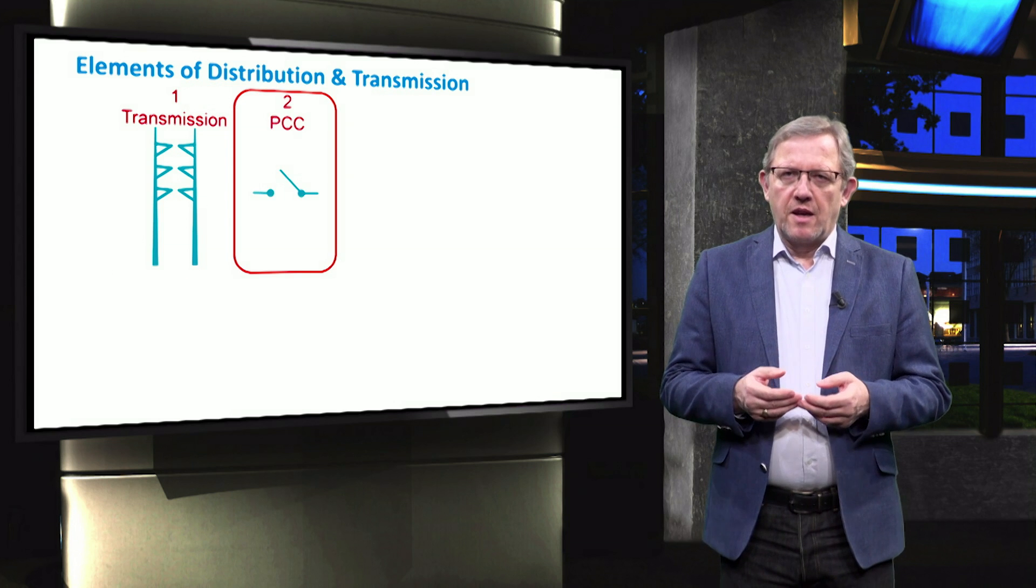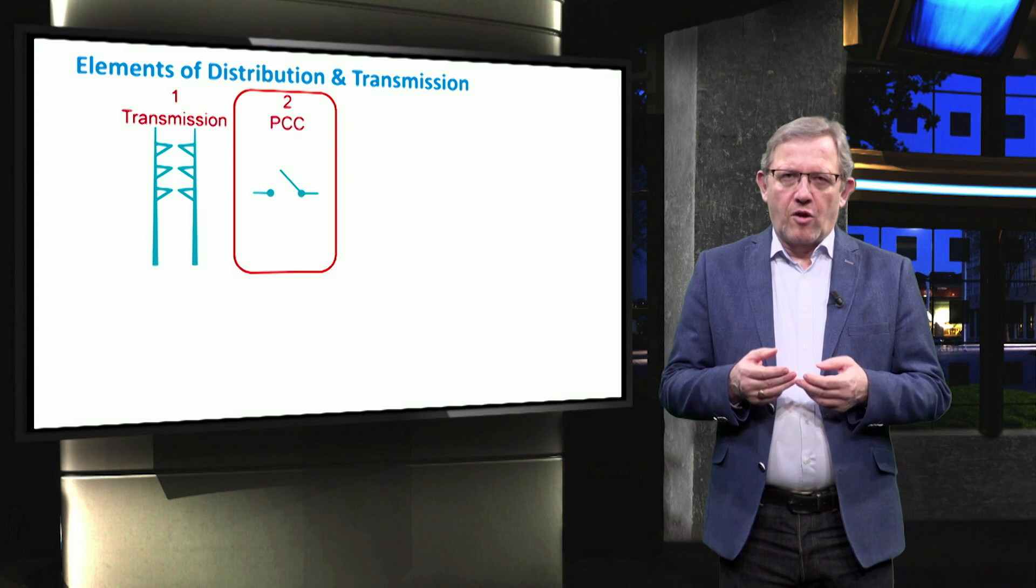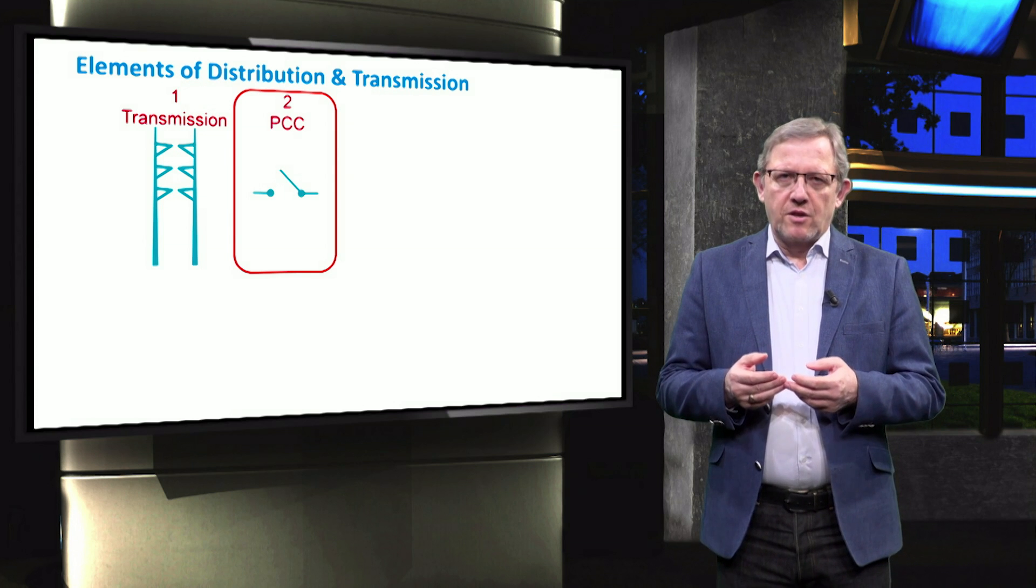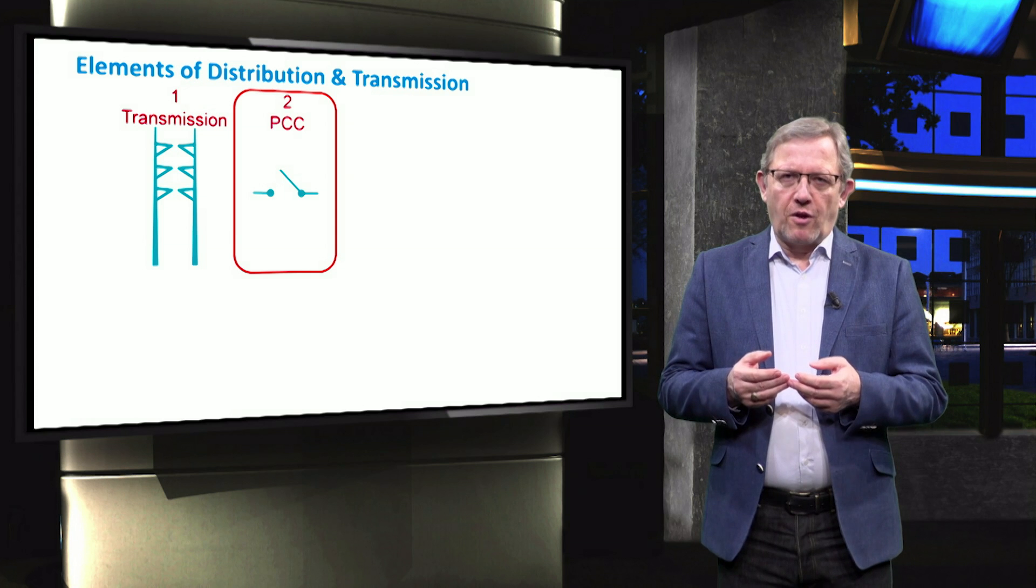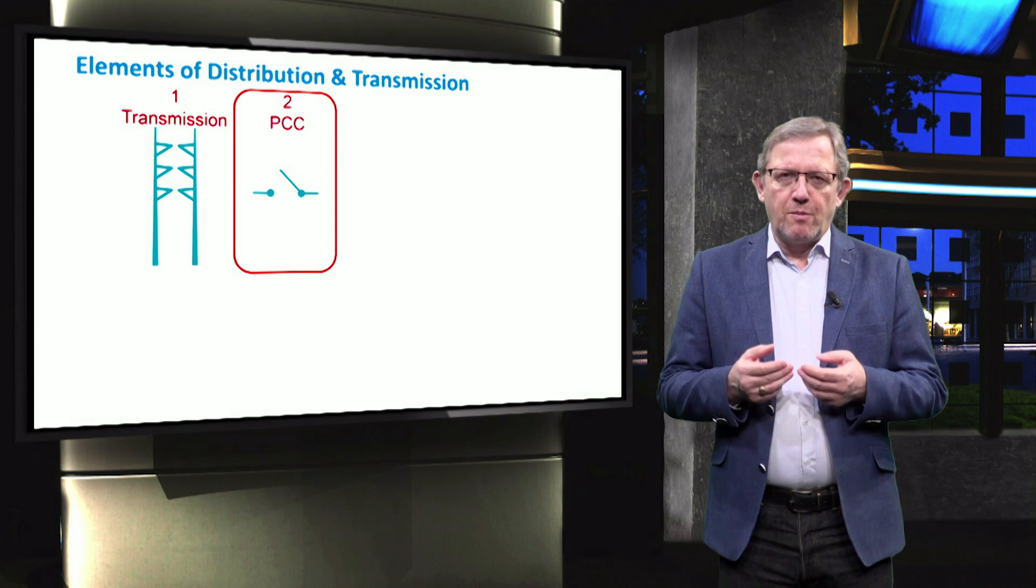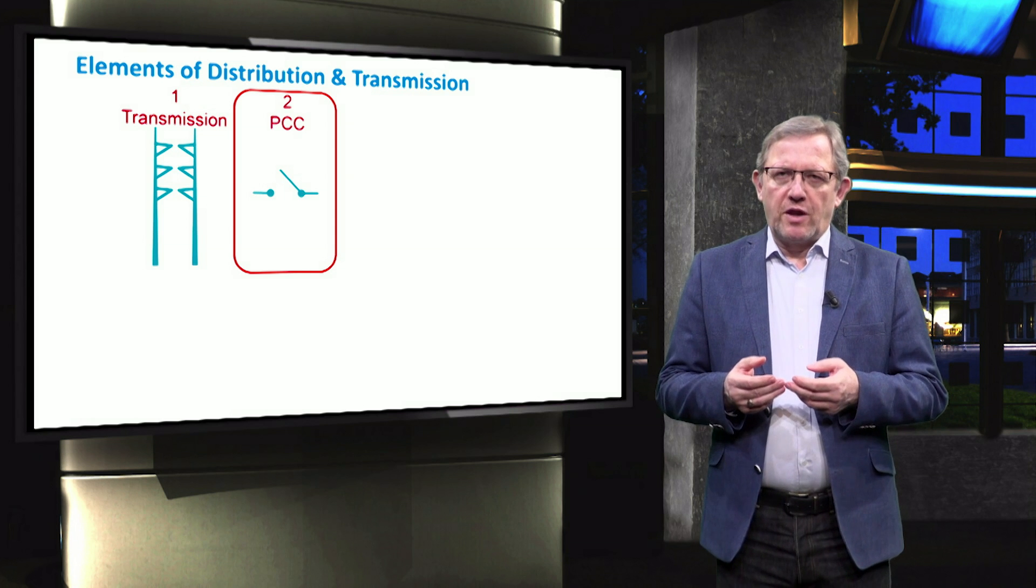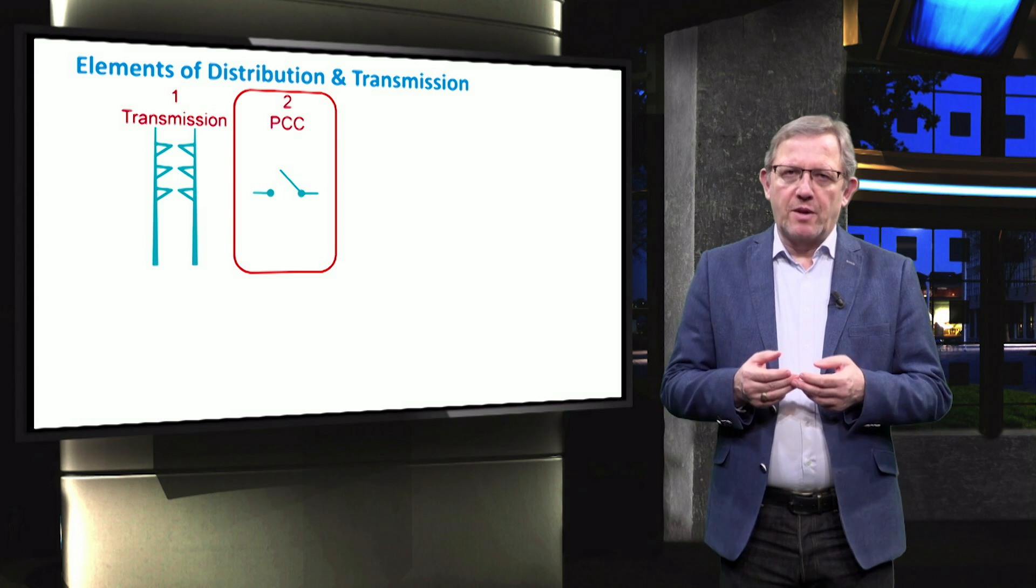Second, at a certain point or bus in the grid, a microgrid is considered to be connected to the upstream main power grid, which is called the point of common coupling. In simple words, this point can be seen as a gateway between a microgrid and the external upstream grid.